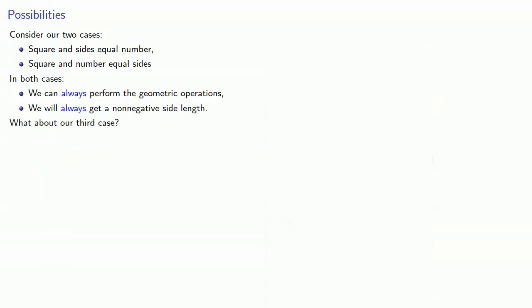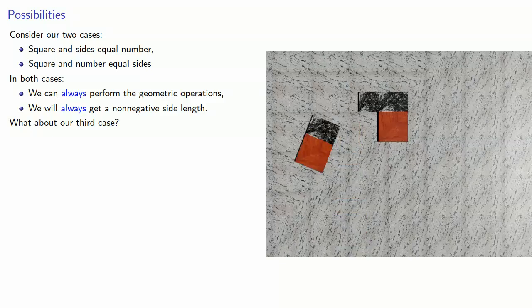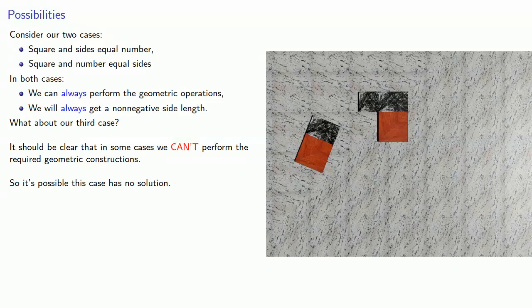But what about our third case? Since the solution requires us to cut off a part equal to the square, it should be clear that in some cases we can't perform the required geometric constructions, so it's possible this case has no solutions.